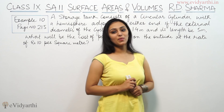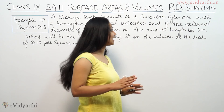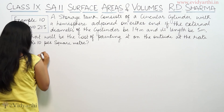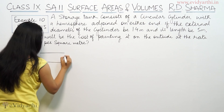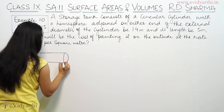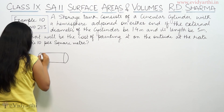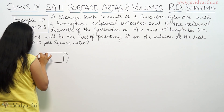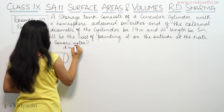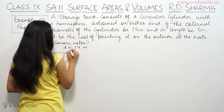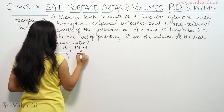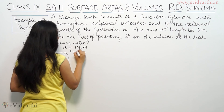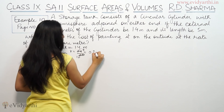The cost of 1 square meter is rupees 10, so we have to find the total cost of painting overall. The diameter given is 1.4 meters, so the radius is 1.4 divided by 2, which equals 0.7 meters.